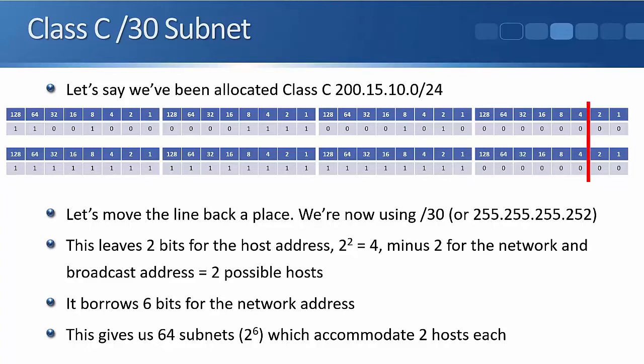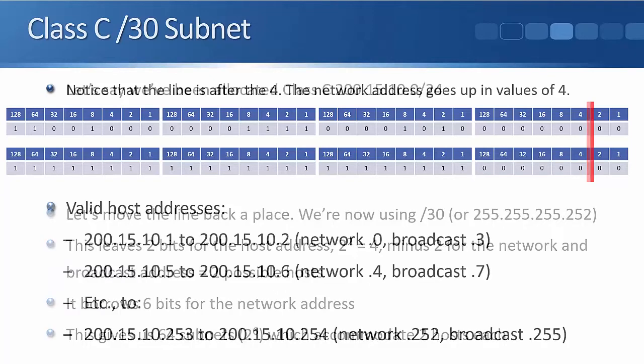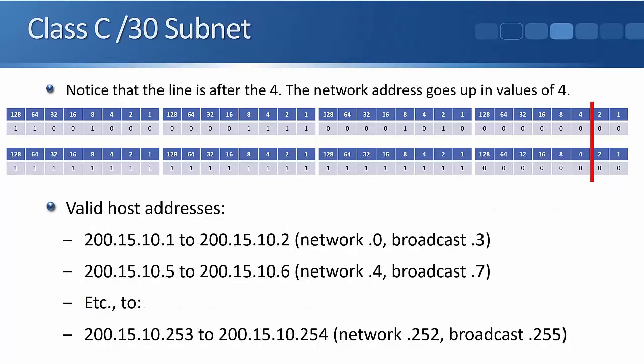Counting up: 2, 4, 8, 16, 32, 64 subnets, each accommodating two hosts. The valid addresses on the first subnet: network address is 200.15.10.0, broadcast address is 200.15.10.3, valid addresses are .1 and .2. The next subnet: network is .4, valid addresses are .5 to .6, broadcast is .7. The next subnet: network is .8, valid addresses are .9 and .10, broadcast is .11, and so on.